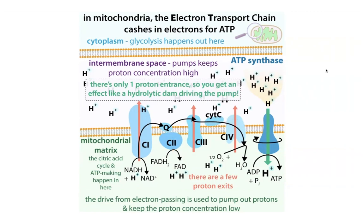The movement of those electrons goes from something that wants them less to something that wants them more — and oxygen is like the king of wanting them more. Ultimately, you get to oxygen, you're passing electrons on to oxygen, and therefore you're generating a large amount of energy that can be used to create ATP.